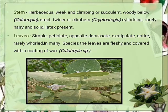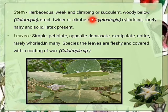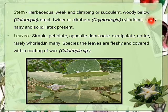Stem: herbaceous, weak and climbing, or succulent. In Calotropis the stem is erect — that means the stem stands straight above the ground. Twiners or climbers, for example Cryptostegia, cylindrical (round) stem is present, rarely hairy and solid. Latex is present in the stem.